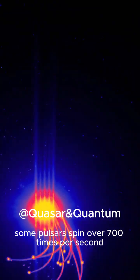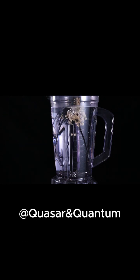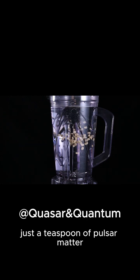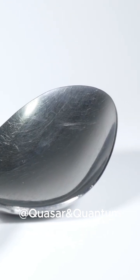Some pulsars spin over 700 times per second. That's faster than a kitchen blender. And they're incredibly dense. Just a teaspoon of pulsar matter weighs about a billion tonnes. That's more than Mount Everest.